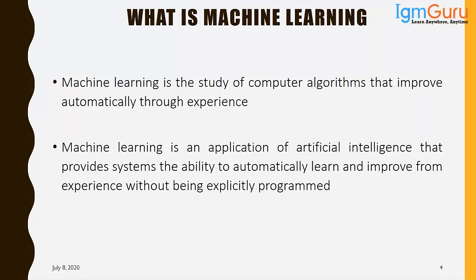If a customer is not buying from you, that essentially means they are buying from your competitor. You apply statistical techniques on that dataset to derive a conclusion: given a set of attributes, can I predict whether a particular person is going to buy my car or not? That's the kind of prediction you'll be doing using machine learning techniques.